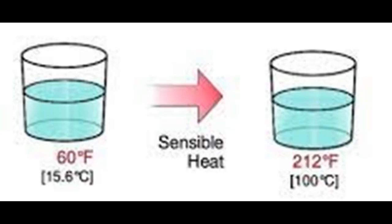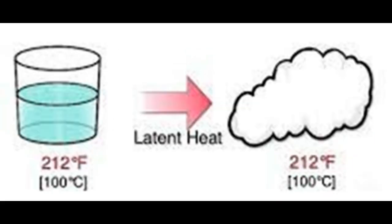Sensible heat is when a change in temperature can be measured by a thermometer, or when we put our hand on an object and feel heat — that is sensible heat. Latent heat is absorbed or rejected when a refrigerant is changing state from liquid to gas or vice versa; however, the temperature remains the same. Heat is added to the refrigerant but does not register on a thermometer — it just changes the refrigerant state from gas to liquid or vice versa. This is also known as hidden heat.